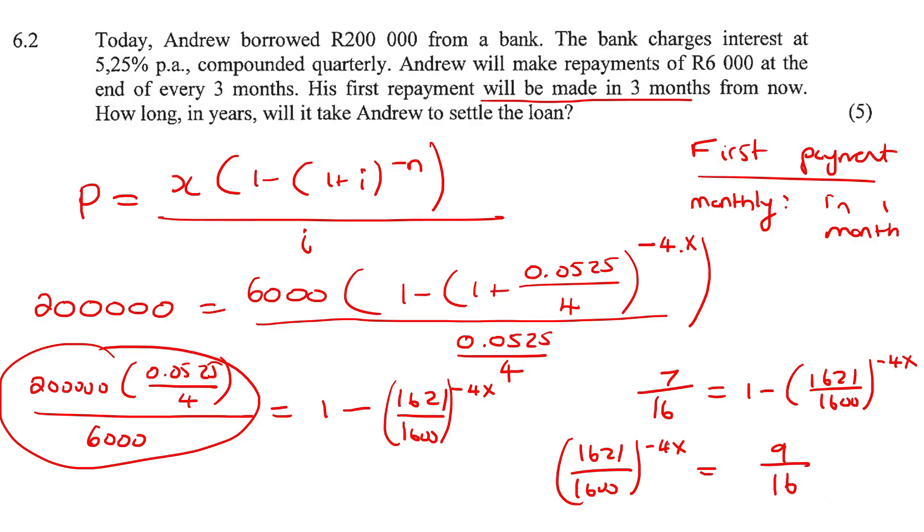And now we can use logs. So the thing we're looking for is negative four X. Then you say log. Then you're gonna put the base, 1621 over 1600. And then this part of here, nine over 16. So you can go ahead now and type all of that on your calculator.